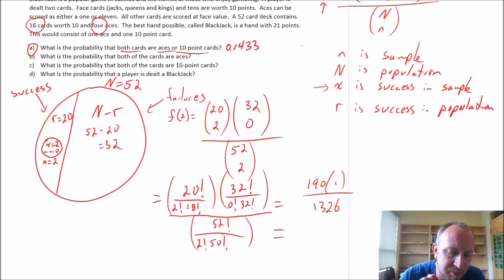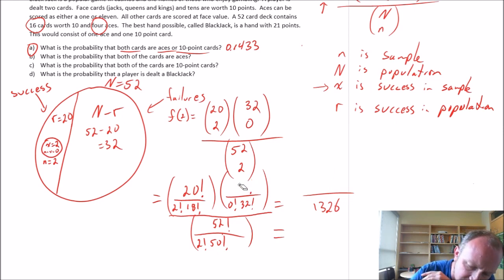Part B. What is the probability that both of the cards are aces? So only a few things change in our calculation here. I'm going to only erase what's going to change. So here, let's start fresh here and here and here. This will change up here. Let's see.